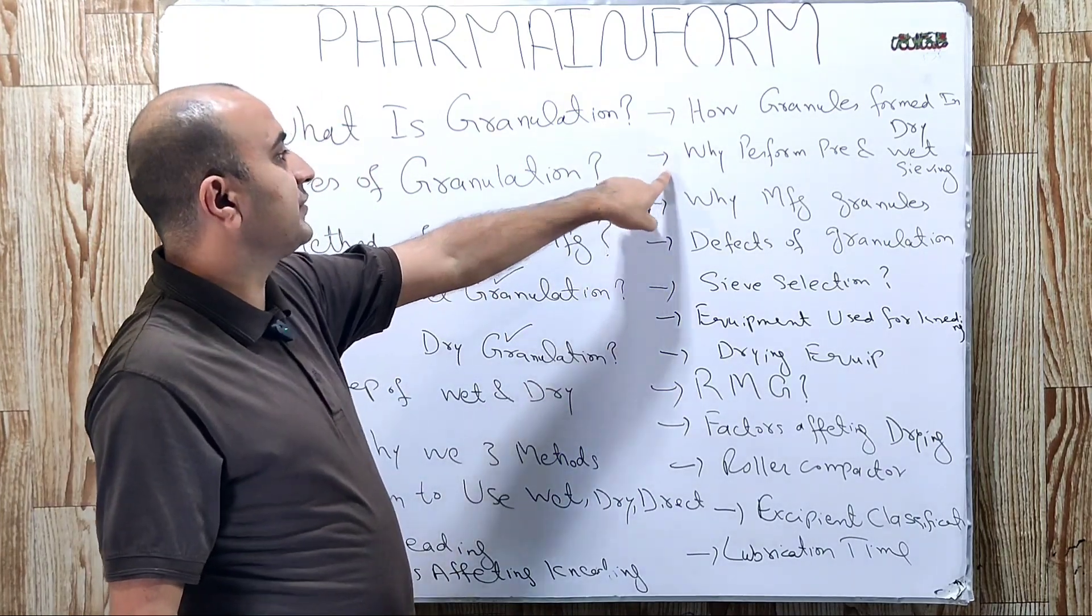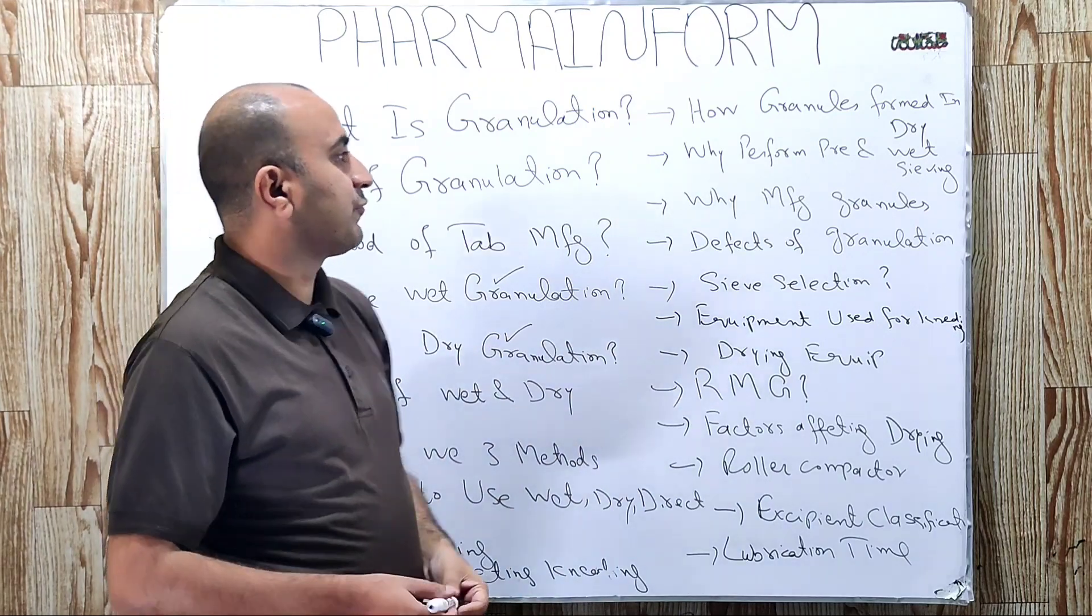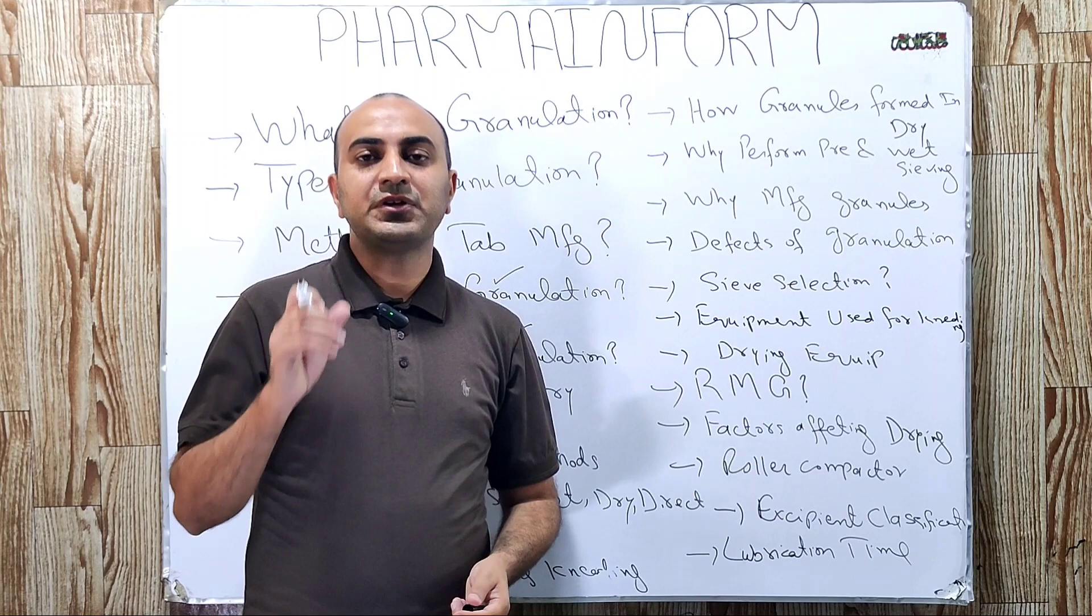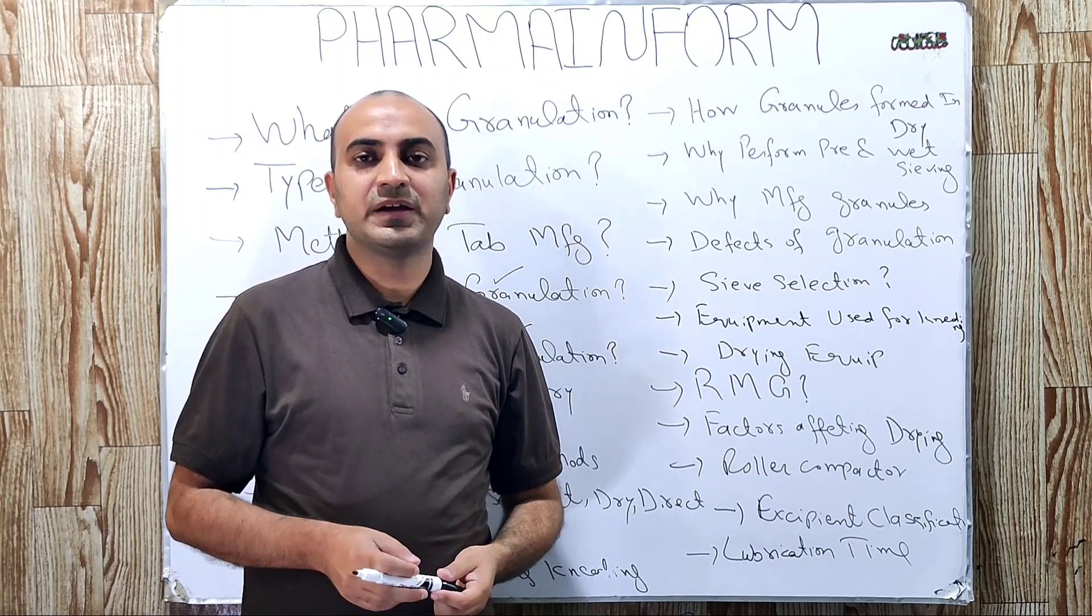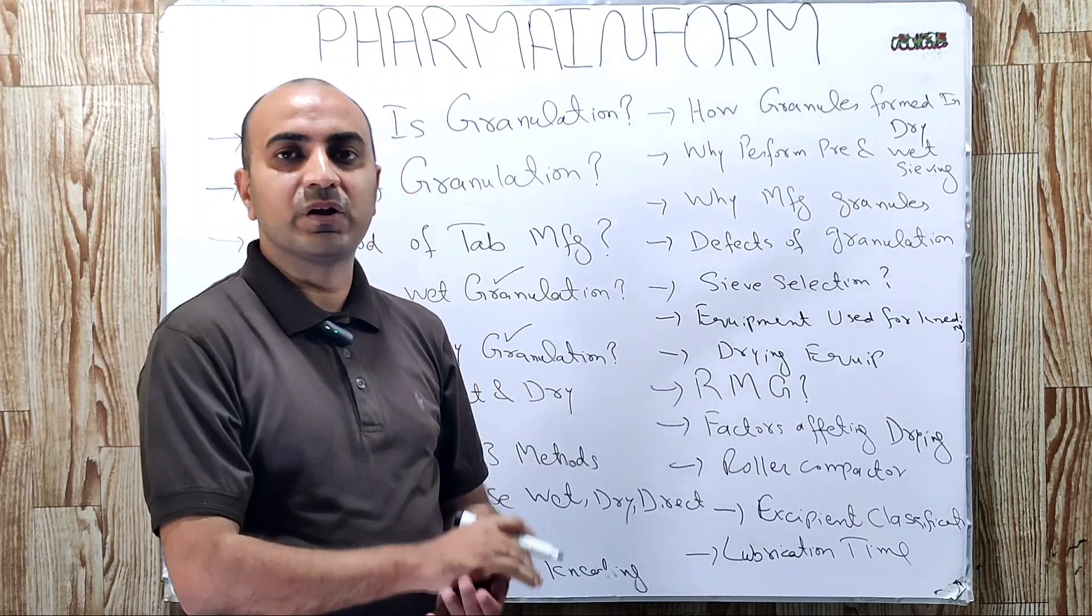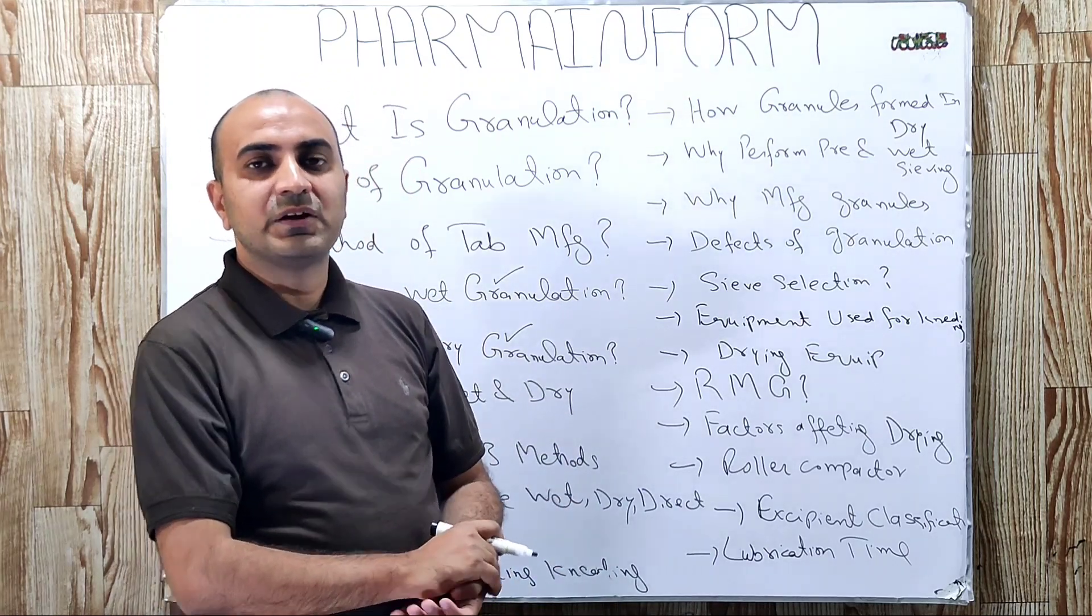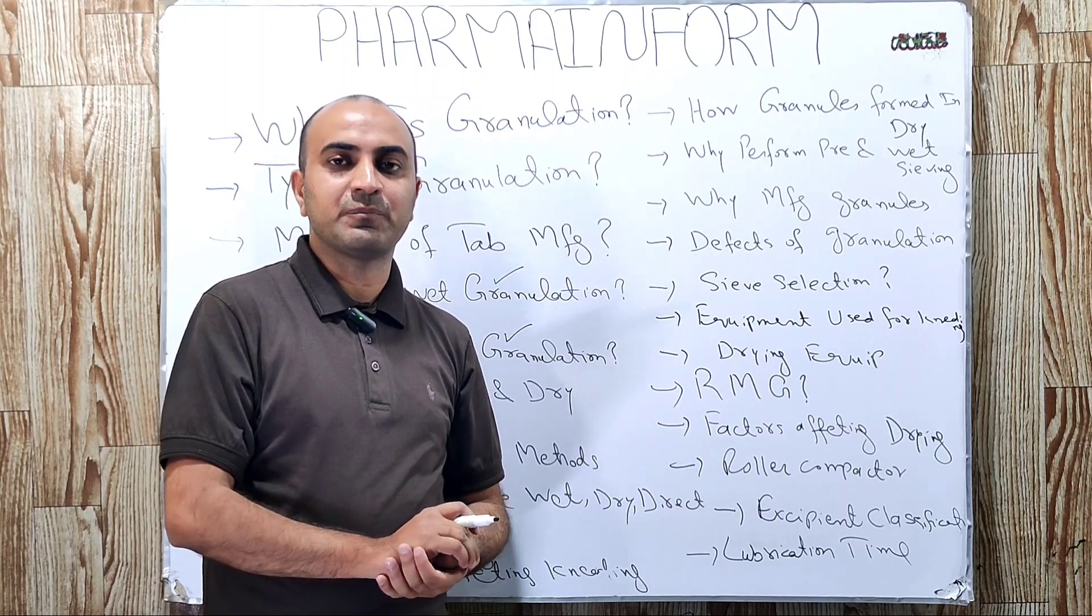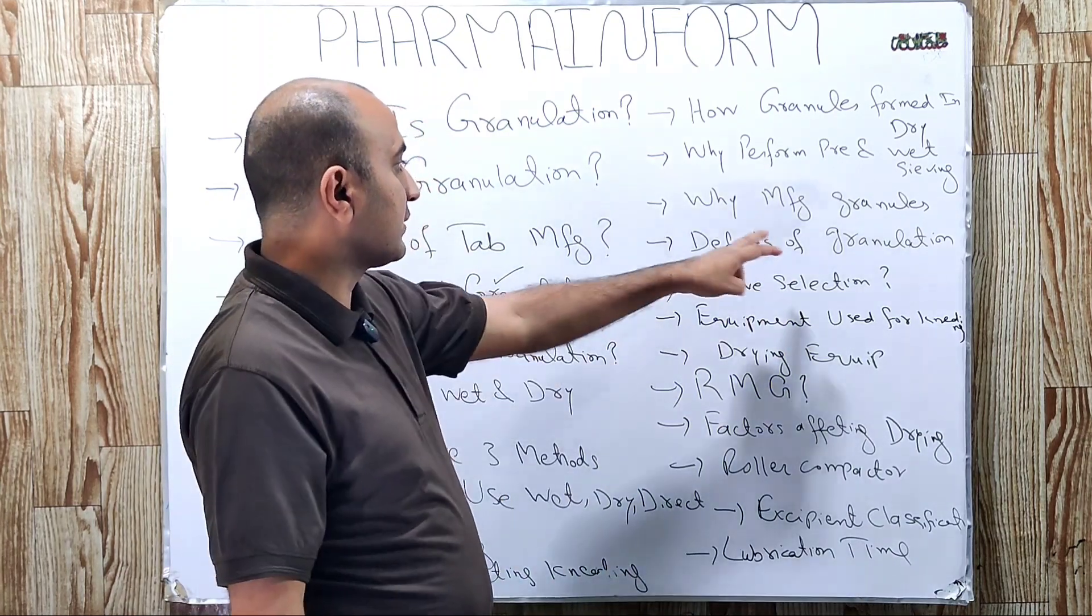The next question is why we perform pre-sieving and wet-sieving. Pre-sieving is performed to break large lumps, to make our product of uniform size, to remove any foreign material or objects if present in the product.